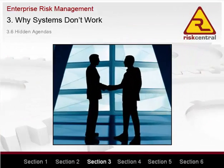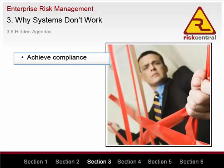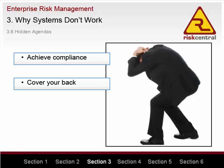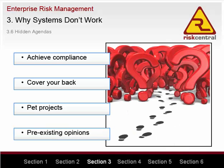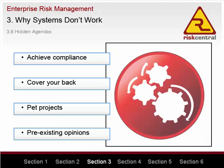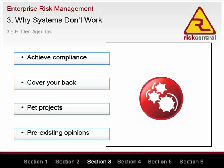Hidden agendas. Although there is common agreement about what the objectives of ERM systems should be, the stated objectives are often undermined by hidden alternative objectives. Some examples of alternative objectives are: to achieve compliance with a standard requirement or rule — in other words, the risk management system only exists to get a tick in the box; a system to cover your backside if something goes wrong; to obtain funds for a pet project or to increase the importance of someone's job; or to validate someone's pre-existing opinions. Companies regularly waste millions of dollars, waste people's time and stifle productivity because risk management systems have improper hidden objectives. There is no point in having a system which no one can trust or understand.